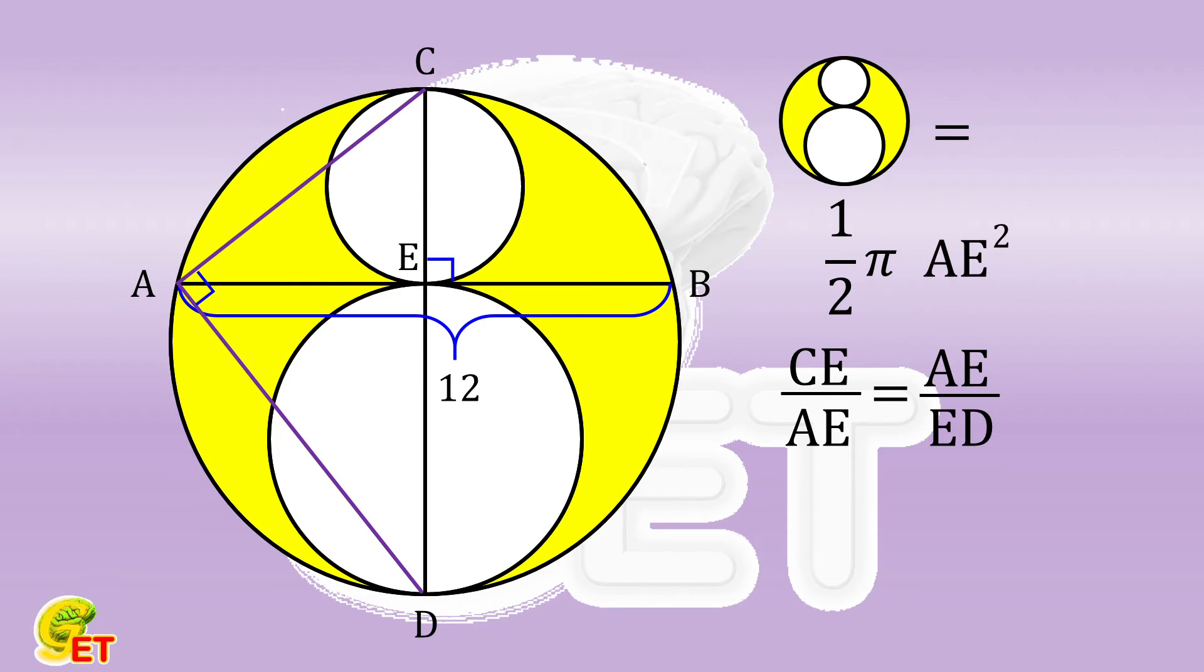The diameter CD being perpendicular to the chord AB must bisect AB. Then AE is equal to half of AB. As a result, the area of the shaded part is 18 times pi. Thank you for watching, and see you next time.